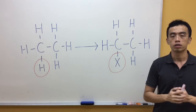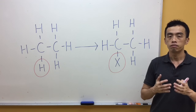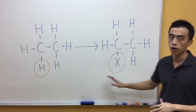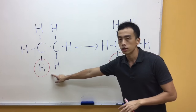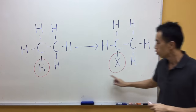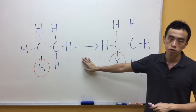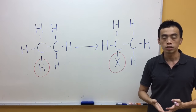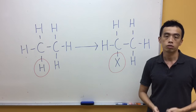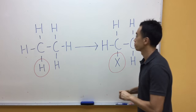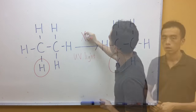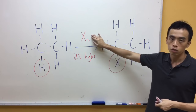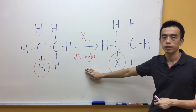Now the first preparation reaction is a free radical substitution of our alkanes to haloalkane — substituting this halogen with halogen. The reagents and conditions for this conversion are halogen, either chlorine or bromine, in the presence of UV light.